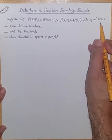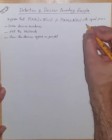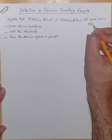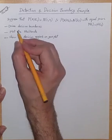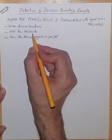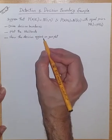Assume equal priors, which means p of e1 is equal to p of e2. So, derive decision boundaries, plot the likelihoods, and show the decision regions on your plot.